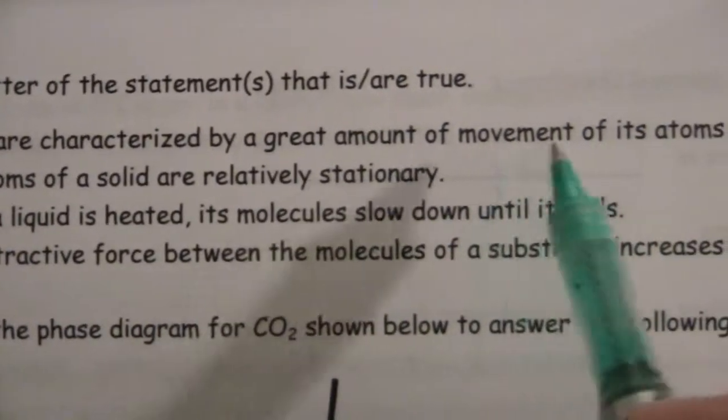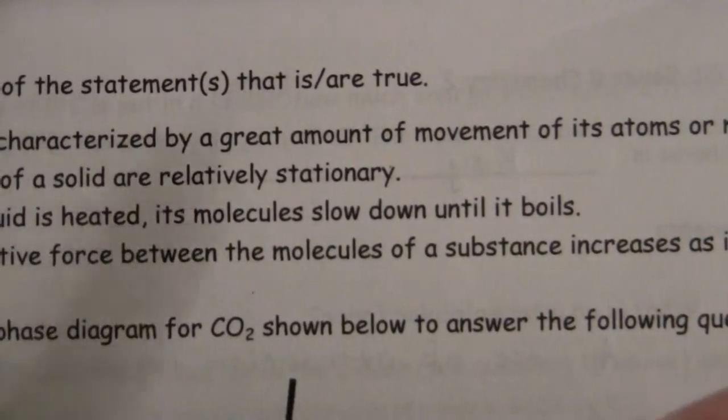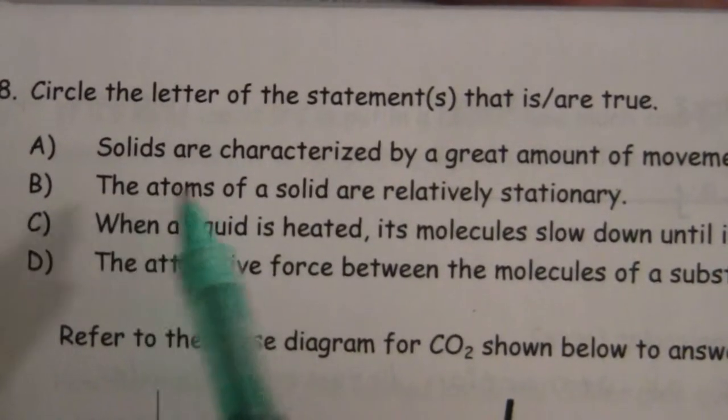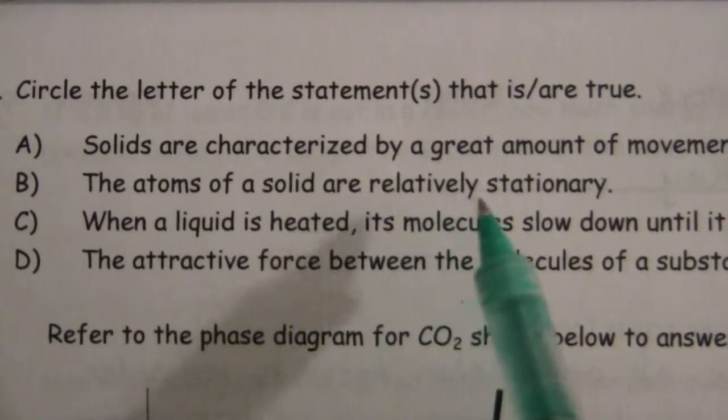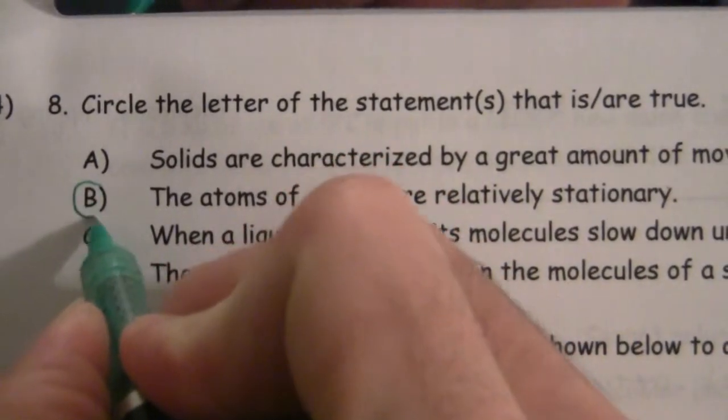That indicates that the movement of the atoms or molecules is actually quite limited. So that one's not true. The atoms of a solid are relatively stationary. Now that makes sense. We're going to circle this one. That one is true.